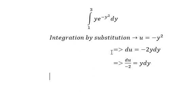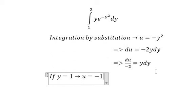Now we need to change the number 1 and number 3. If y equals 1, you get u equals negative 1 because you put 1 in the y and that's why you get the value of u.